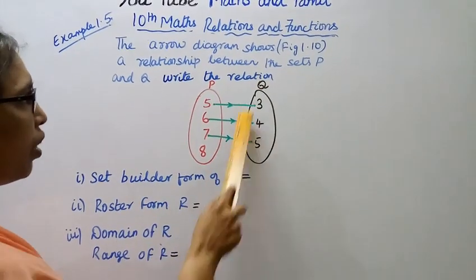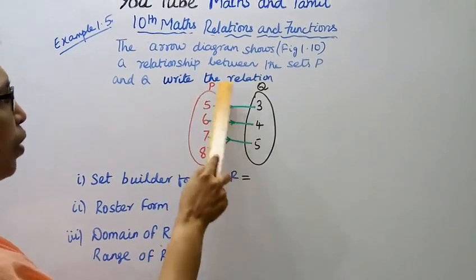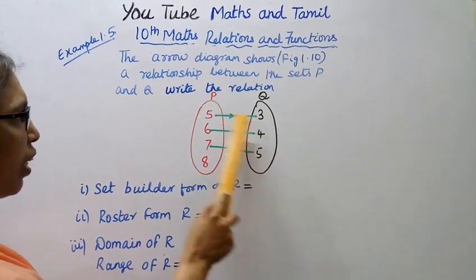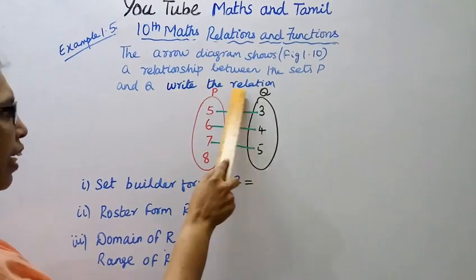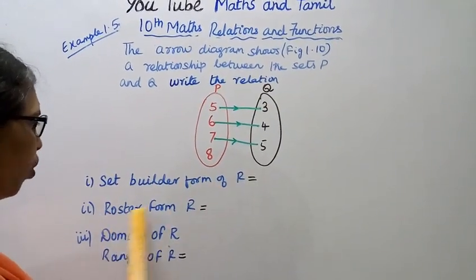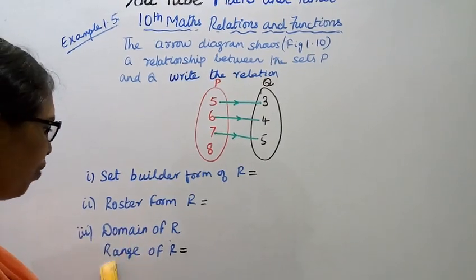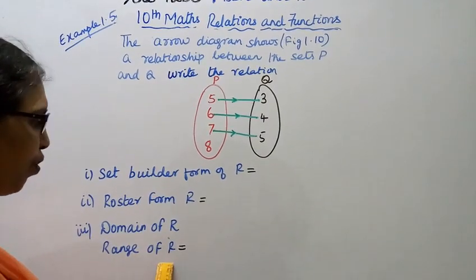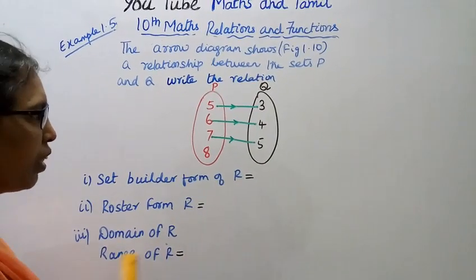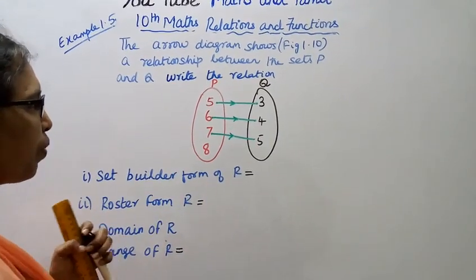Given the sets P and Q and the arrow diagram, write the relation in set builder form of R, roaster form of R, domain of R, and range of R. This is the set builder form of R.